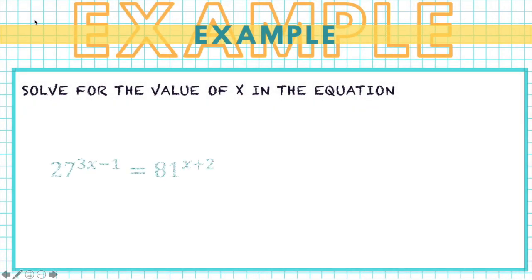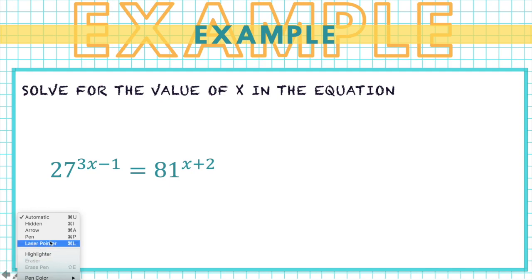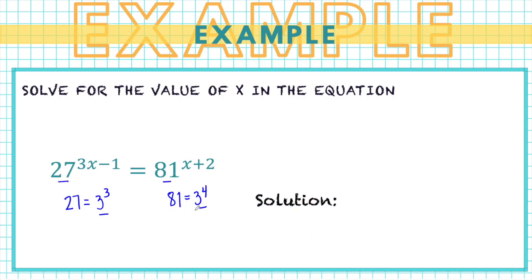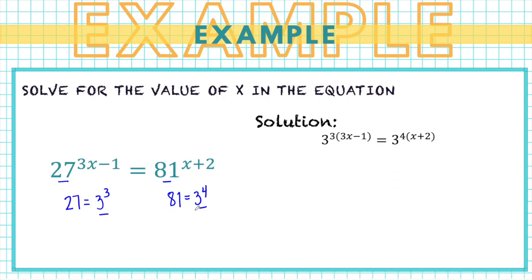For the next example, we have 27 raised to 3x minus 1 equals 81 raised to x plus 2. Again, we change both sides so they have the same base. We know that 27 is the same as 3 raised to 3, and 81 is the same as 3 raised to 4. So we replace 27 with 3 cubed and 81 with 3 raised to 4, giving the equation 3 raised to 3 times (x minus 1) equals 3 raised to 4 times (x plus 2).